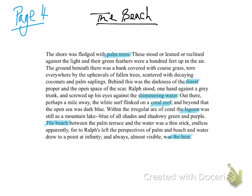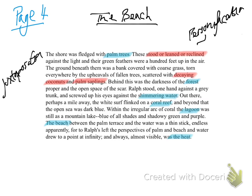So the island has palm trees and coral reefs and lagoons, and there's a relaxed atmosphere created through the personification of palm trees which "stood or leaned or reclined." But there are subtle suggestions of something else going on here as well. The palm saplings are juxtaposed with decaying coconuts — a neat symbol of life and death — while beyond them is the darkness of the forest and the open space of the scar. In literature, darkness is thematically connected to evil or a threat of some kind and will often foreshadow something bad happening. In Lord of the Flies, darkness is unavoidable: the boys are on an uninhabited island in the middle of the Pacific Ocean, and at night the younger boys in particular will experience a fear which will eventually destroy their fragile society.